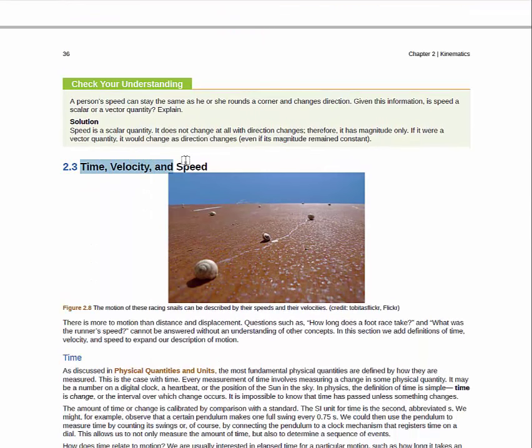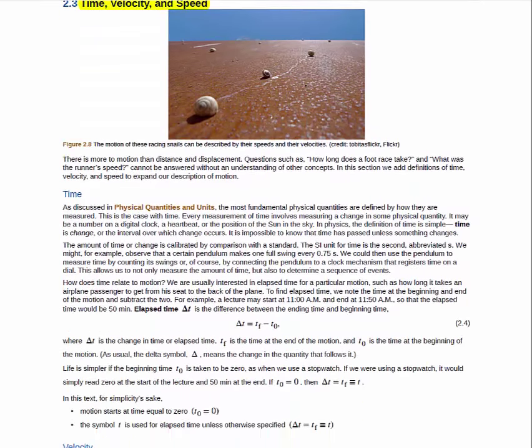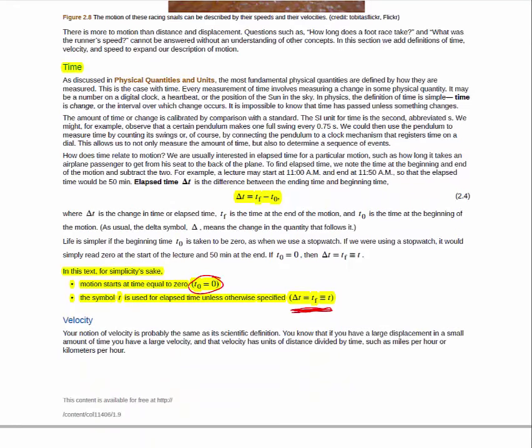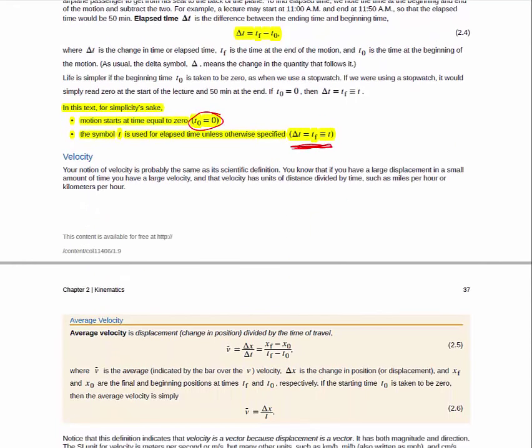Section 2.3 starts talking about time, velocity, and speed. First, you talk about time. Now, here again, you have that delta. In our class, we will make the same statements of simplicity as your book does. I will often use just t for delta t. Anytime you see t, I'm almost always talking about a change in time, because I've just picked the initial time to be zero.